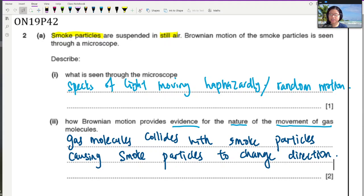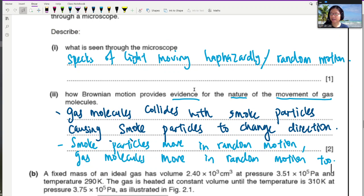That would be the first point. Gas molecule collides with the smoke particle causing the smoke particles to change direction. And your smoke particle is moving in random direction, random motion. So the gas molecules also move in random motion as well. So this part, when we say specks of light, this is the actual thing that you observe. You don't actually get to see the smoke particle too. What you are seeing is the light that is reflecting off the surface of the smoke particle.